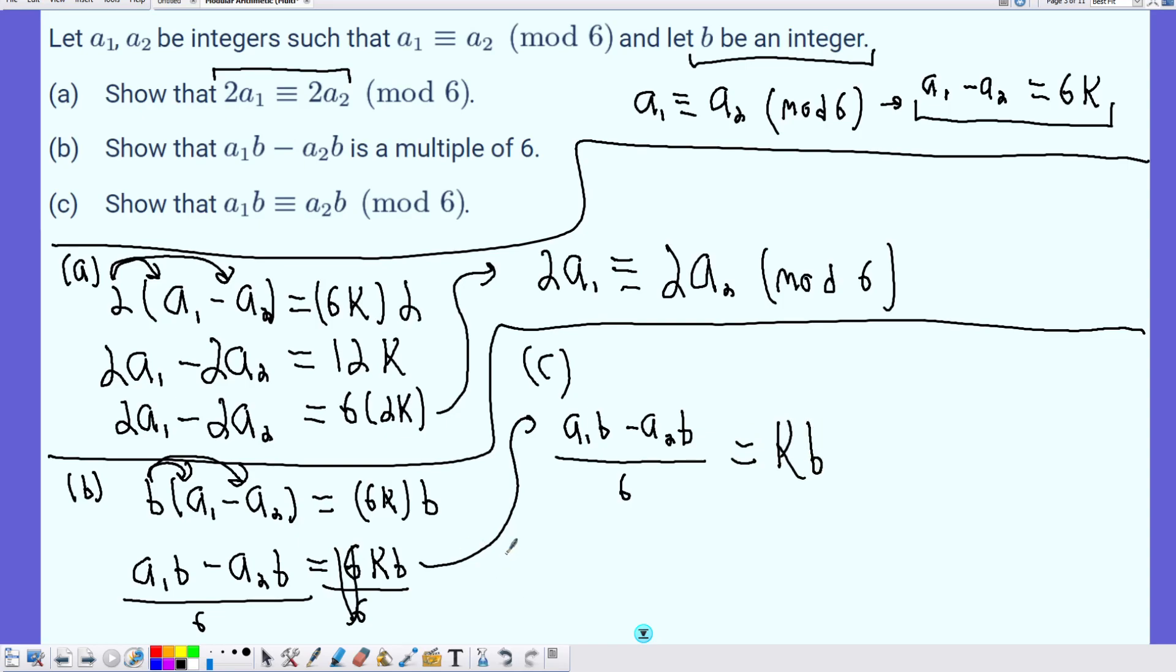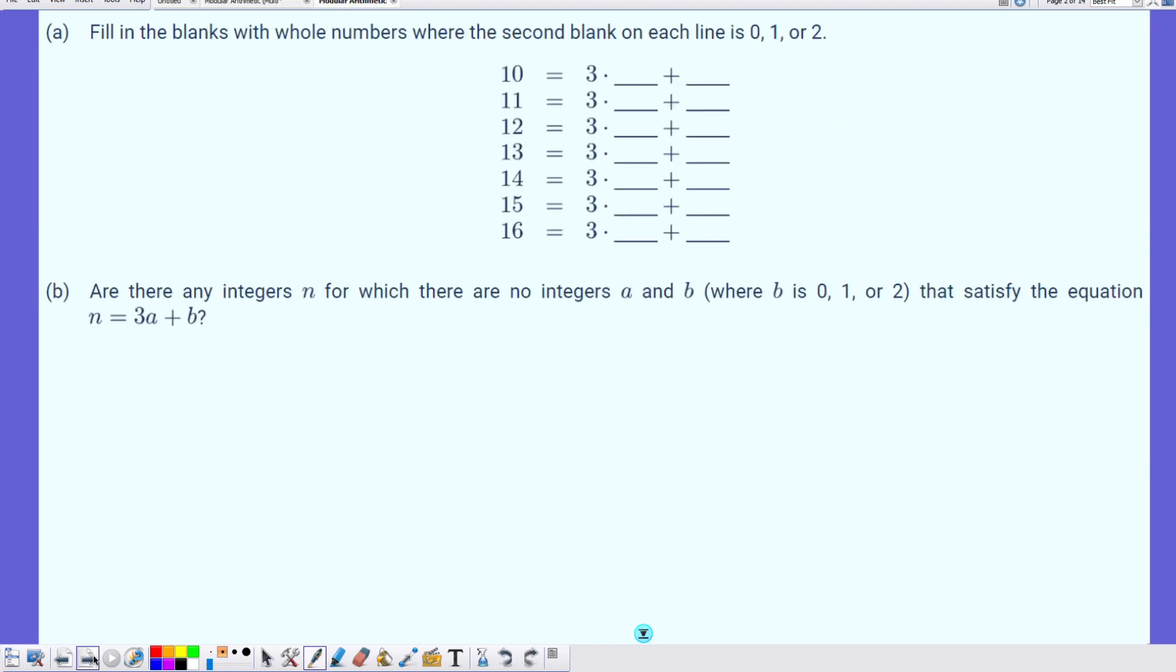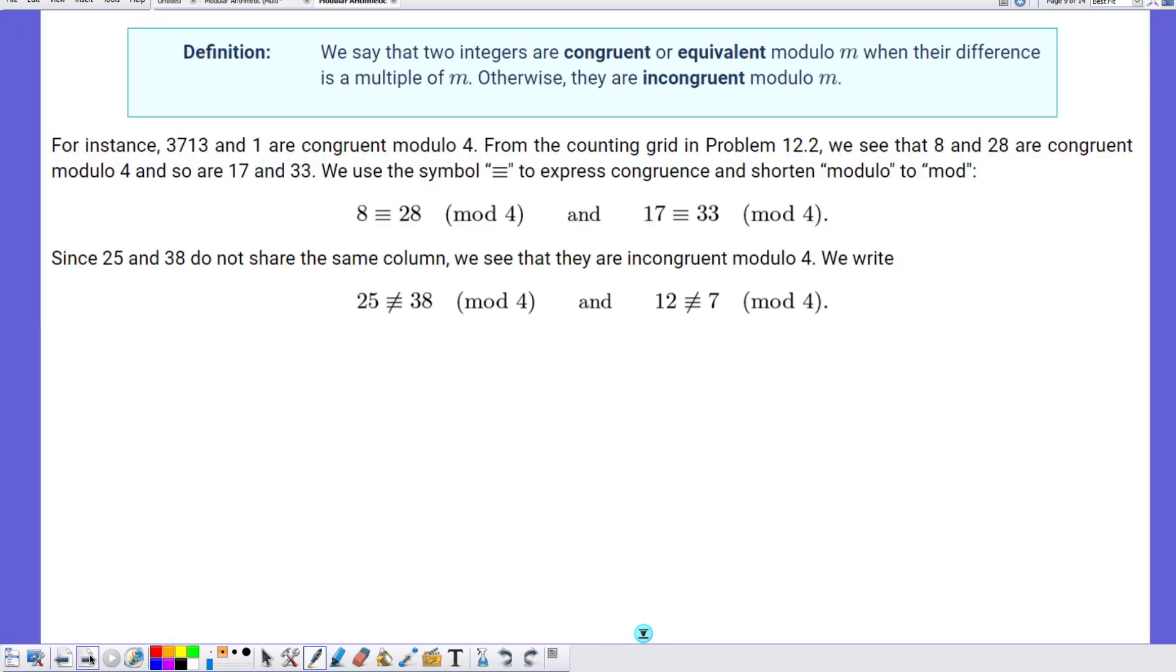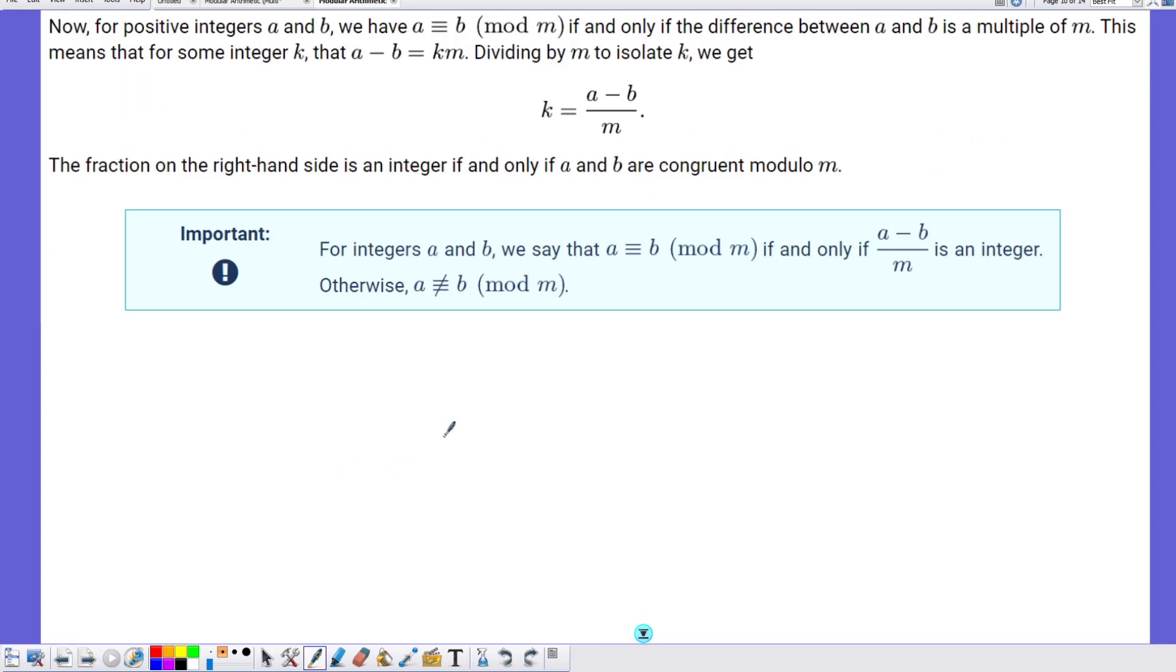And if we remember that definition of modulo congruence, we know that for any integers, they are congruent mod M if and only if the difference over M is an integer, like in our example KB.